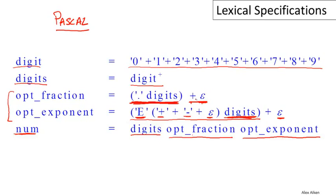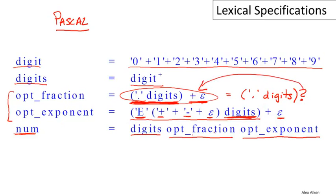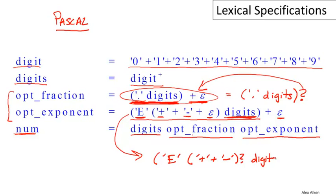This idiom of using 'plus epsilon' to indicate something is optional is also extremely common, so there's another shorthand many tools provide. A question mark after a regular expression means exactly this construction — we take that regular expression and OR it with epsilon. So this regular expression with two optional components can be written more compactly: the exponent begins with E, then a sign which is either plus or minus and that's optional (put a question mark after it), followed by a non-empty string of digits. Then the whole exponent is optional, so wrap it and put a question mark after. This is an alternative, more compact way to write this expression.